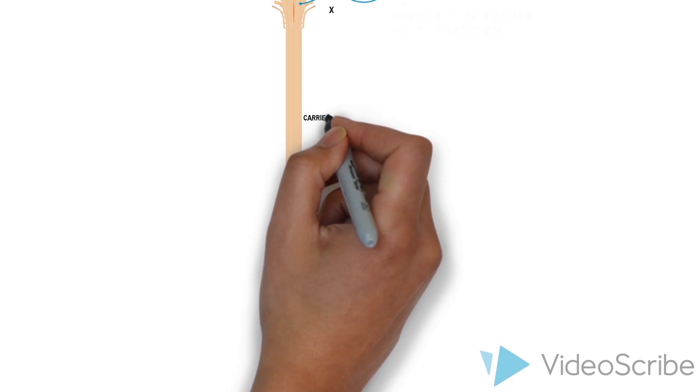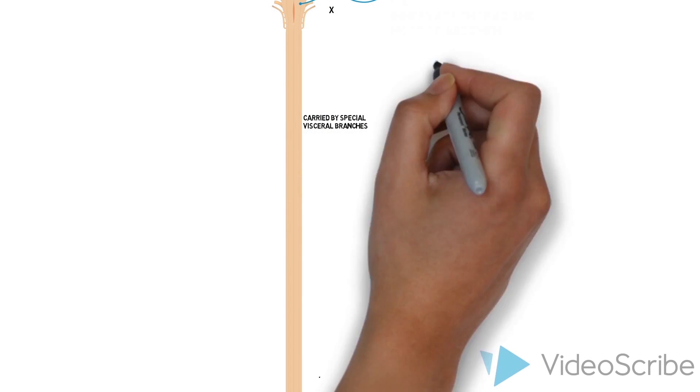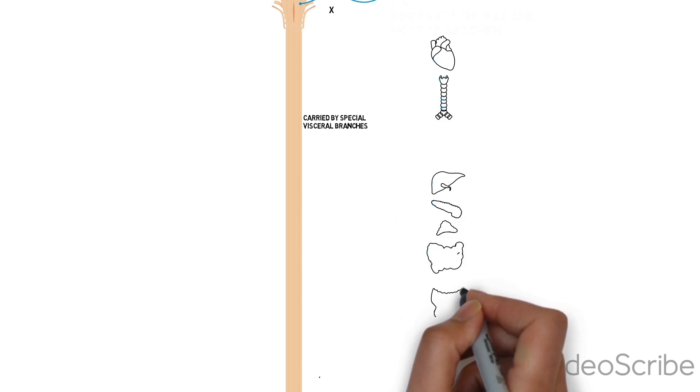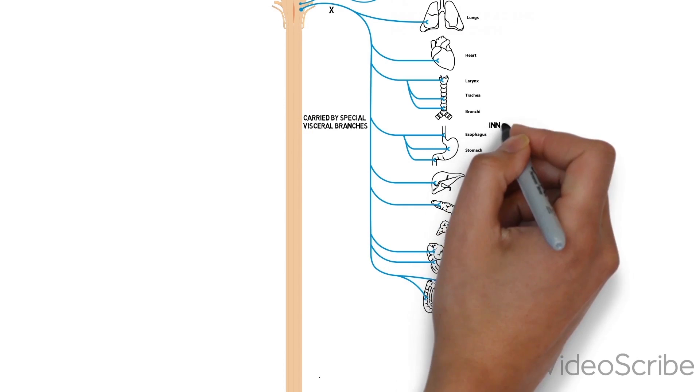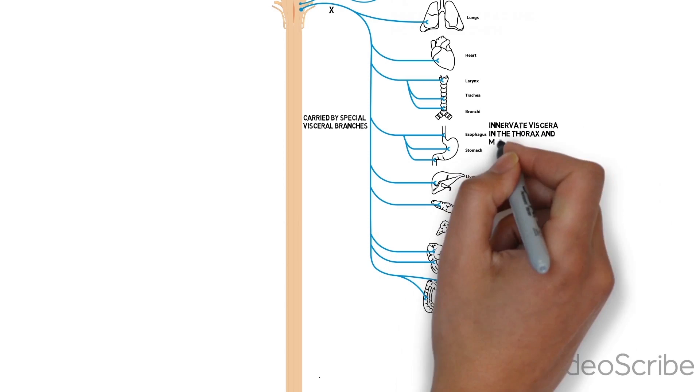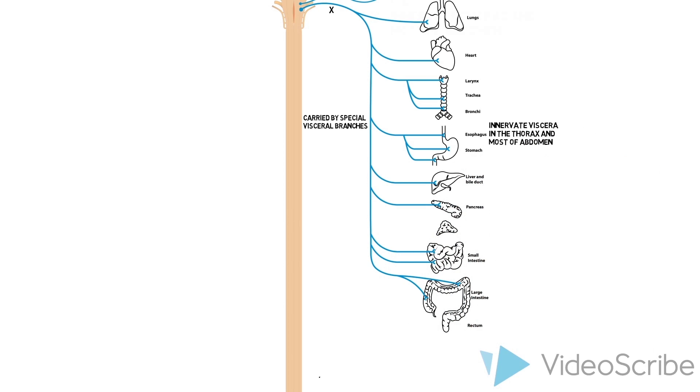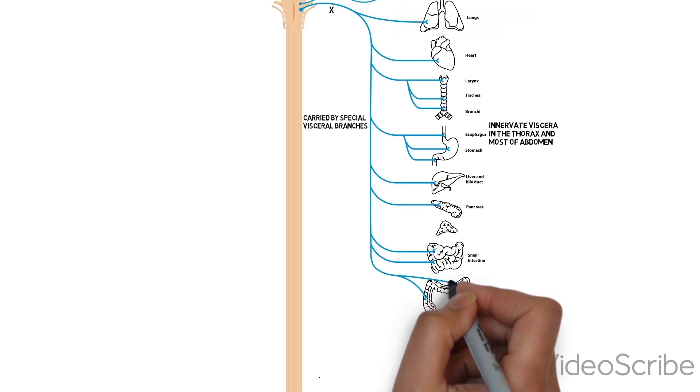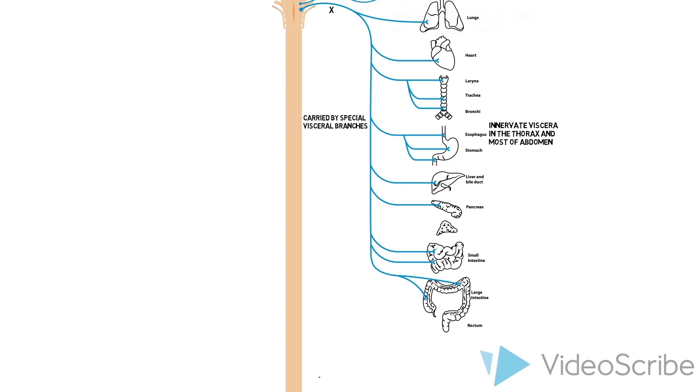Preganglionic visceral motor fibers carried in cranial nerve 10 leave the nerve in special visceral branches that innervate viscera in the neck, thorax, and most of the abdomen. These nerves synapse with the enteric nervous system in the walls of the gut, or with postganglionic neurons in ganglia associated directly with the organ. Vagal innervation to the gut ends just prior to the left colic flexure.